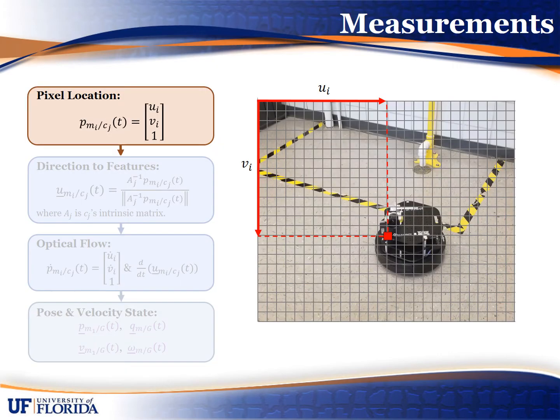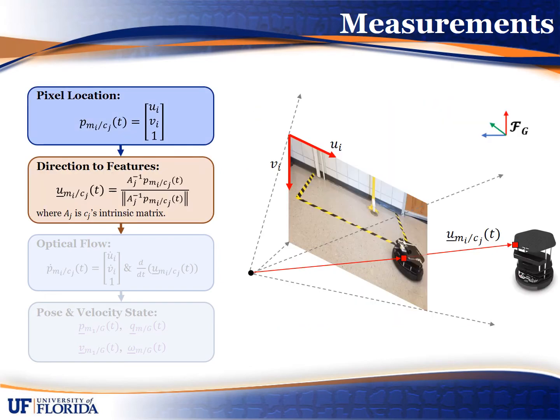To develop image-based estimators and predictors, it's first important to understand exactly what we're measuring from the image. In the image space, we measure the pixel coordinate, typically given by U or V of some feature. By using a pinhole camera model, we can relate the pixel coordinates to a Euclidean coordinate system — for example, a unit vector from the camera to the feature can be determined, and the camera coordinate system can be related to any Euclidean reference frame. However, the challenge is that the image is two-dimensional and the Euclidean space is three-dimensional, and the missing dimension is the distance to the target.